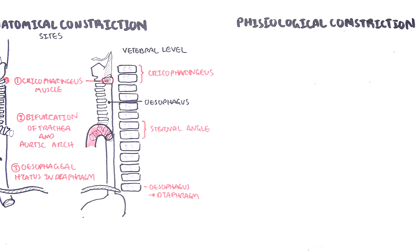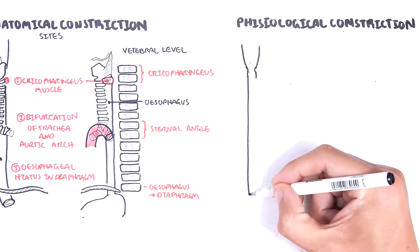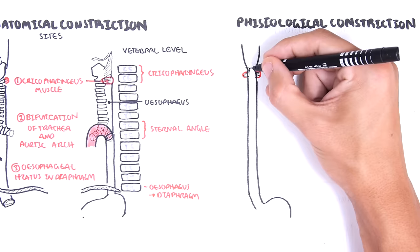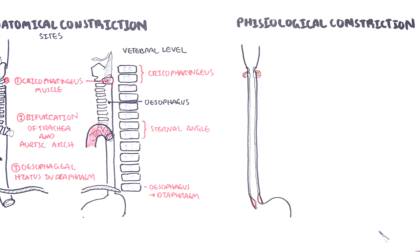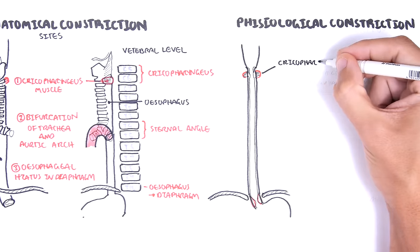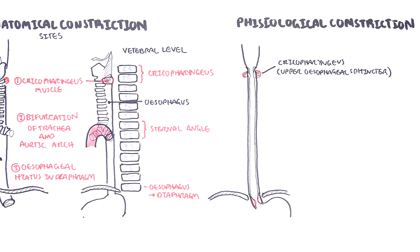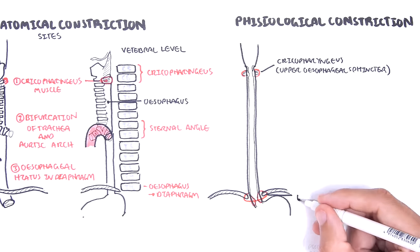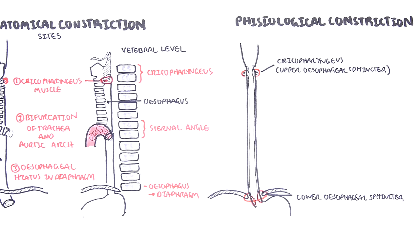Two high pressure zones prevent the backflow of food. These are the upper and lower esophageal sphincters. These functional zones are located at the upper and lower ends of the esophagus. These are physiological constriction sites as well as anatomical.